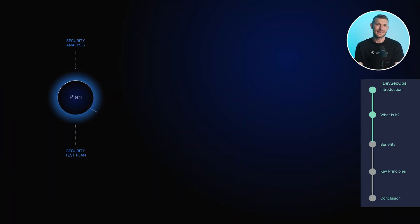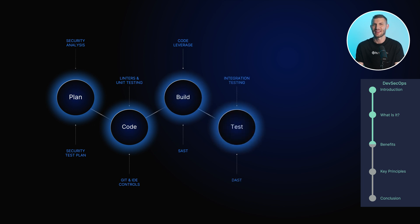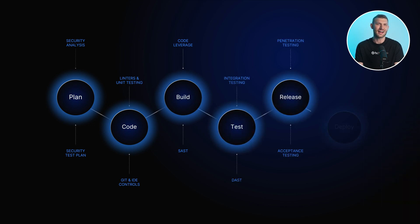This collaboration helps identify potential security risks early, implement necessary security controls, and continuously monitor and improve the software security posture. By adopting DevSecOps, organizations can enhance their security posture, reduce risks, and deliver software that meets the highest security standards.